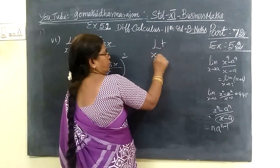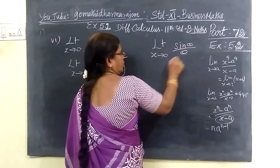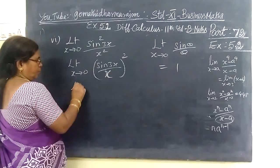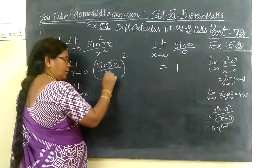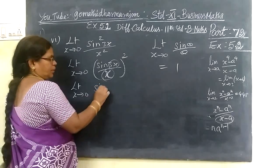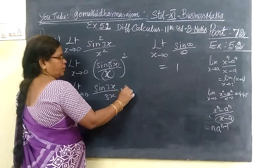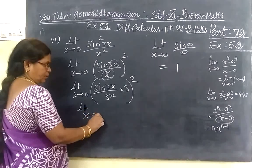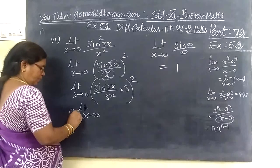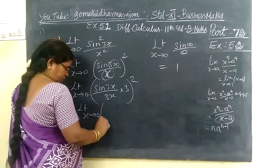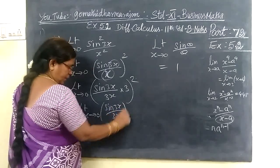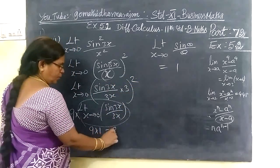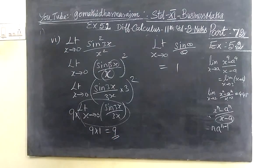Here is limit x tends to 0, sin 3x by x, the whole square. Now, 3x is equal to 3x. So here is limit x tends to 0. Multiply and divide by 3x. That's why all the square is equal to that. So limit x tends to 0, 3 square. Now the 9 is there on the regular scale. Dividing x, 3x by 3x, in the whole square, in the form of 3, I am in the original. So 9 into 1, this is equal to 9.